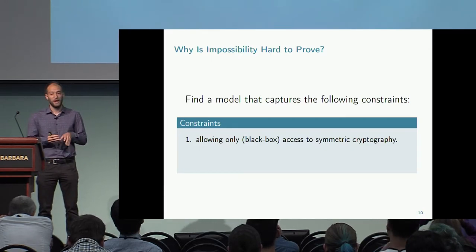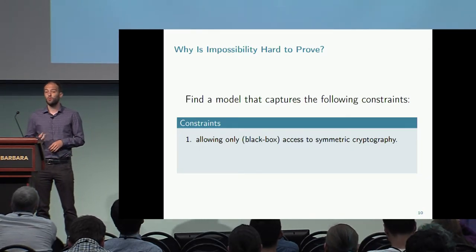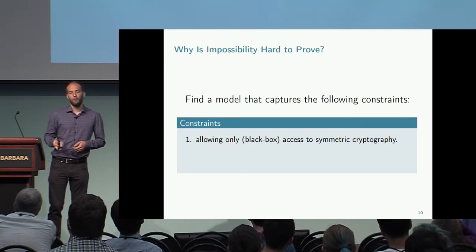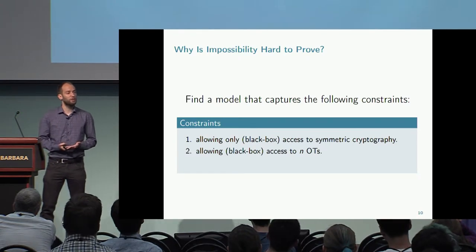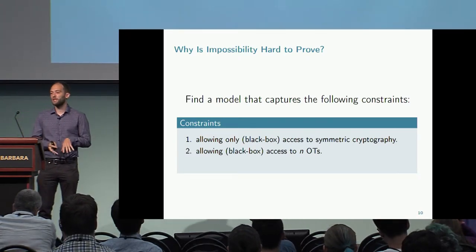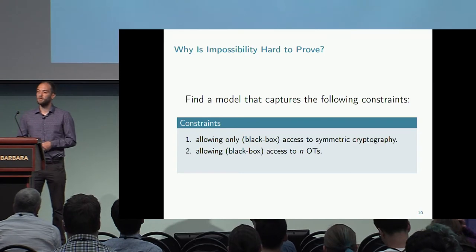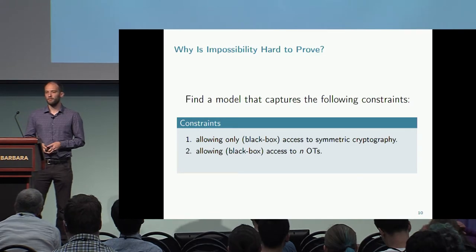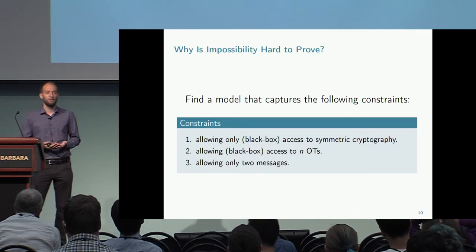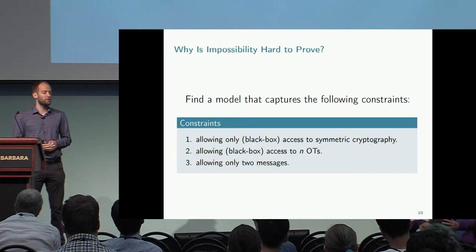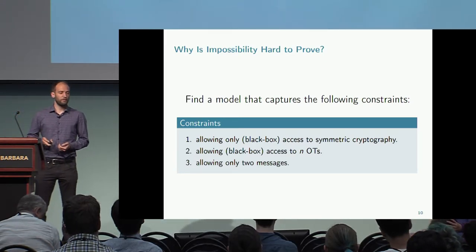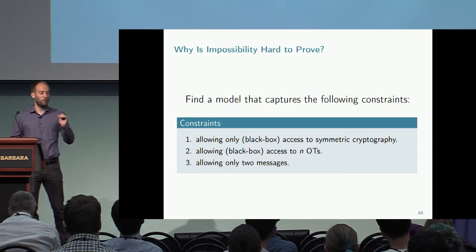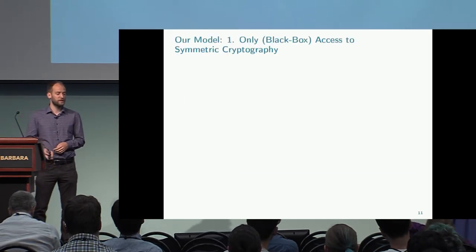For our model, we need to capture three constraints. The first is allowing only blackbox access to symmetric operations, because we want an efficient OT extension scheme. At the same time, we do not want to allow any public key operations. But of course, I need to allow some public key operations in order to start with the critical mass of base OTs. And I also want to consider round complexity — only allowing two messages.